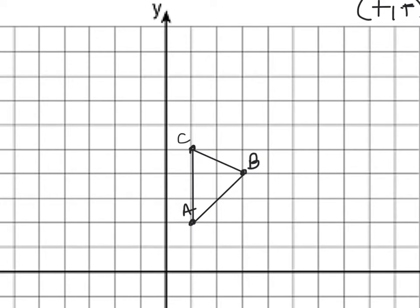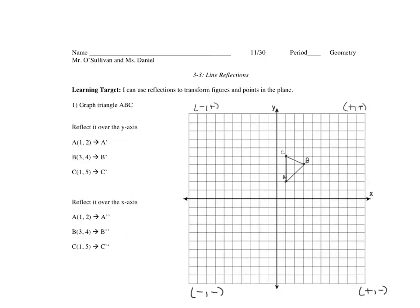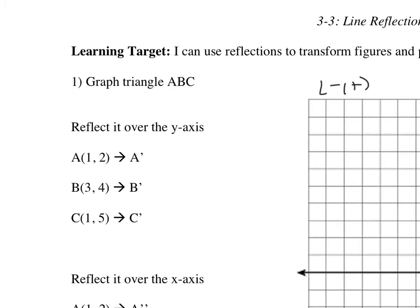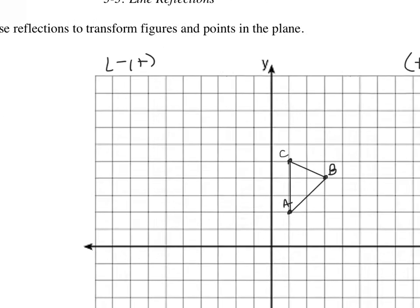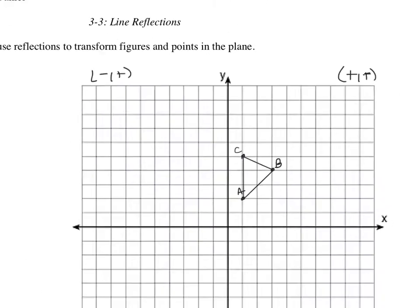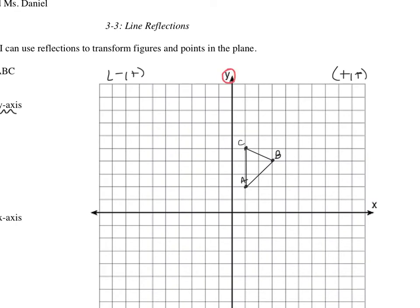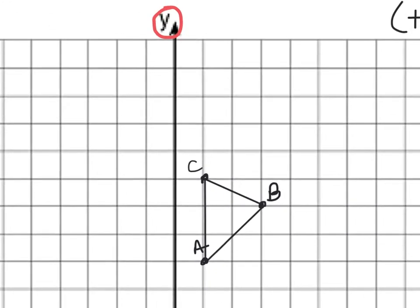Now that I have triangle ABC plotted, we're going to do some special things. The first thing we're going to do is reflect it over the y-axis. Our y-axis is our vertical axis, right here. Whenever you want to reflect, all we're going to do is make our jumps. I'm going to count from C to the y-axis — that's one jump — so I go out 1, and that's C prime.